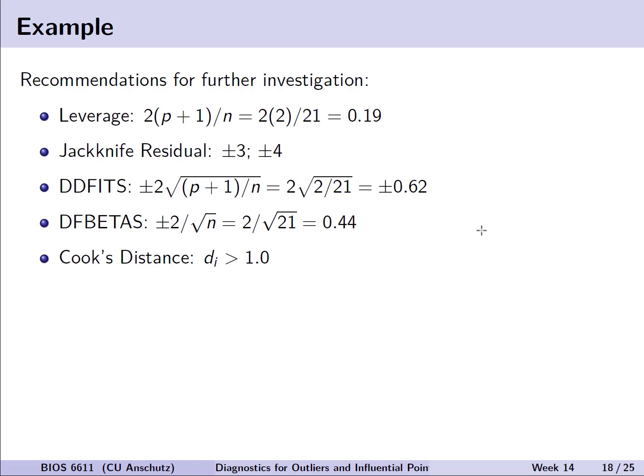Let's remind ourselves what those thresholds were that we want to use for these various quantities of interest. In the case of leverage, we have our 2 times p plus 1 over n. Since we only have one predictor, that's just 1, so we have a threshold of 0.19 that might be concerning. For jackknife residuals, we might look at things that are beyond 3 or 4. Then we have the summaries for DFFITS, DFBETAS, and Cook's distance listed on the screen as well.